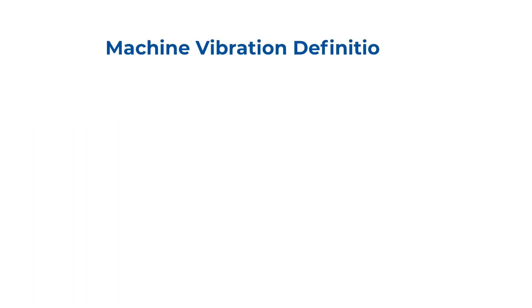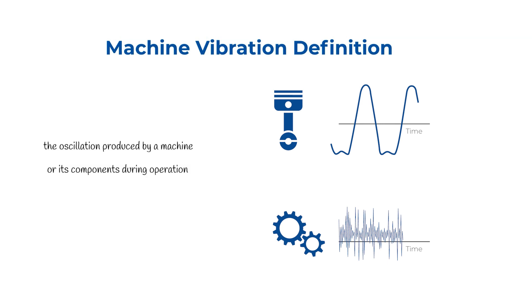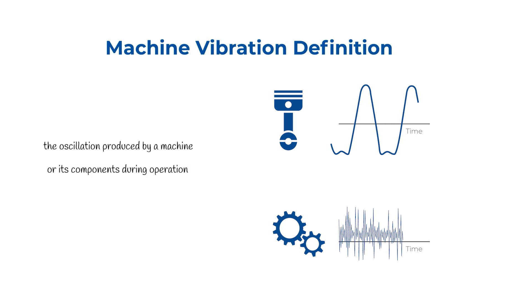Machine vibration is the oscillation produced by a machine or its components during operation. It is vital to understand and manage these vibrations for optimal machine health and performance.